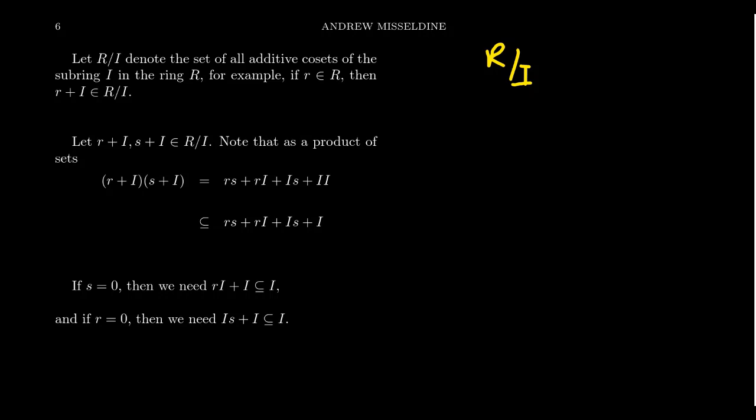R, if we forget the multiplication, is an abelian group. Therefore, every subring of R will automatically be an abelian subgroup. Since R is an abelian group itself with respect to addition, every subgroup of R is a normal subgroup. So if you mod out by anything you'll get an abelian group. If we want to make a quotient ring, we need that multiplication to be well-defined — it's only multiplication that we are really concerned about.